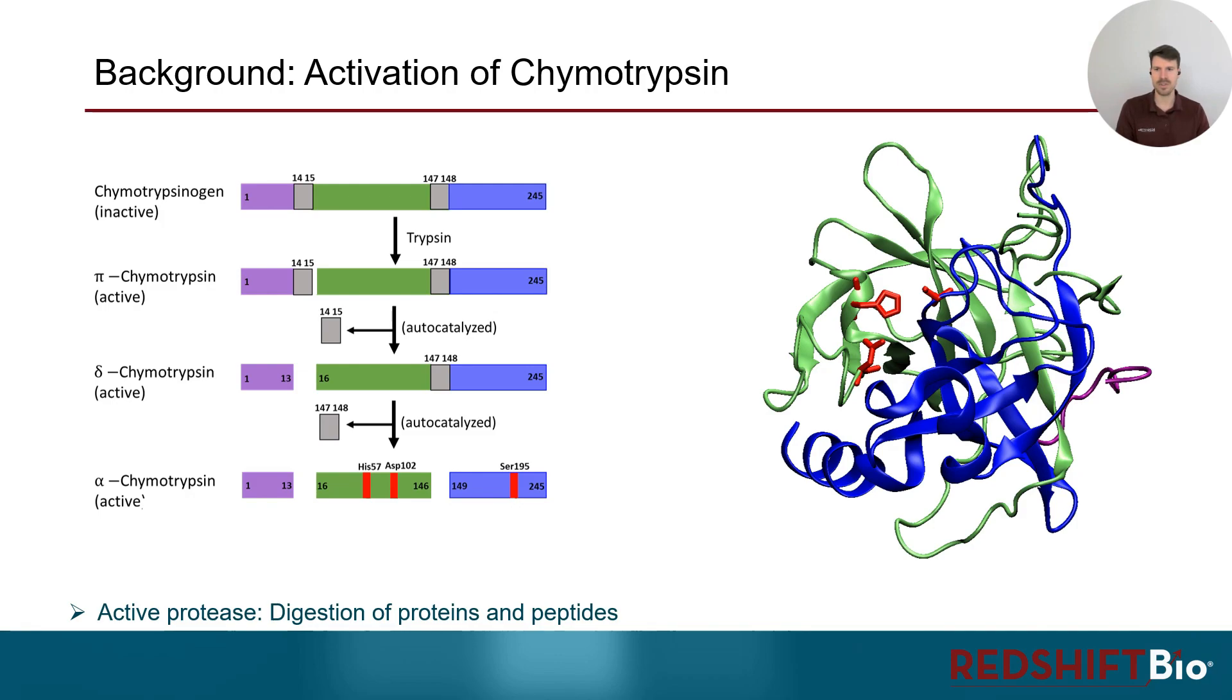The residues 57, 102 and 195 form the active center, the so-called catalytic triad.